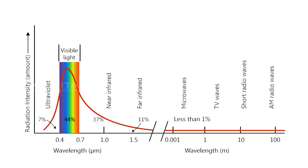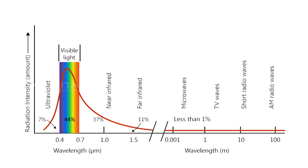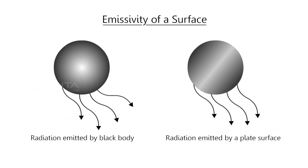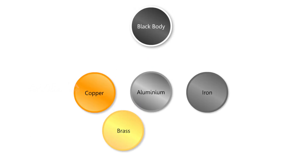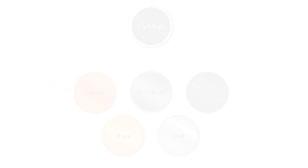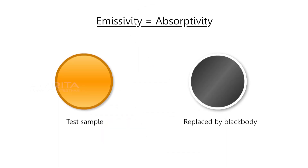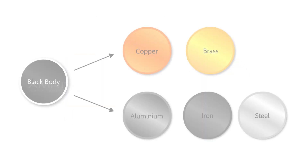That is, a black body is a diffuse emitter. Emissivity of a surface is defined as the ratio of the radiation emitted by the surface to the radiation emitted by the black body at the same temperature. If a sample is replaced by a black body of the same area at the same temperature, under thermal equilibrium the emissivity of the body is equal to the absorptivity. The ratio of emissive power of a body to the emissive power of a black body is called emissivity.